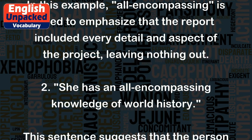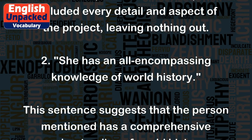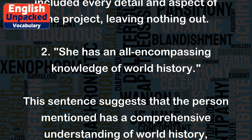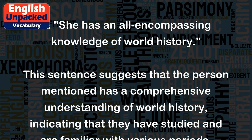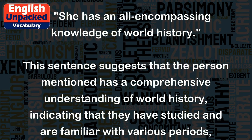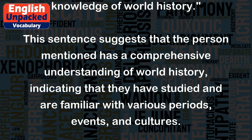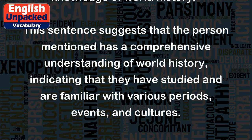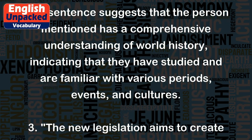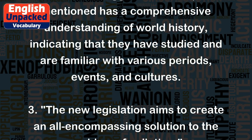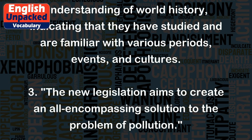Example 2: She has an all-encompassing knowledge of world history. This sentence suggests that the person mentioned has a comprehensive understanding of world history, indicating that they have studied and are familiar with various periods, events, and cultures.